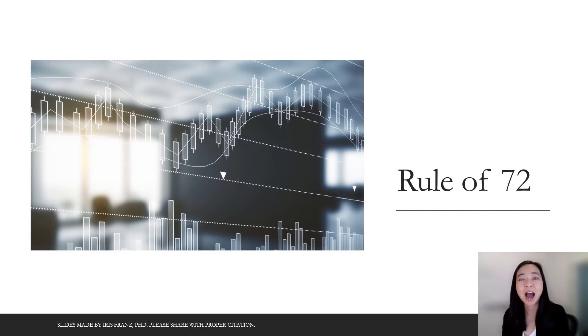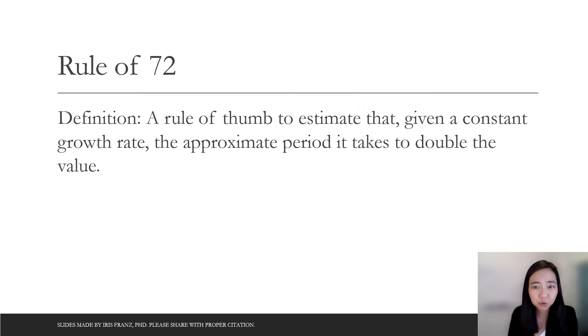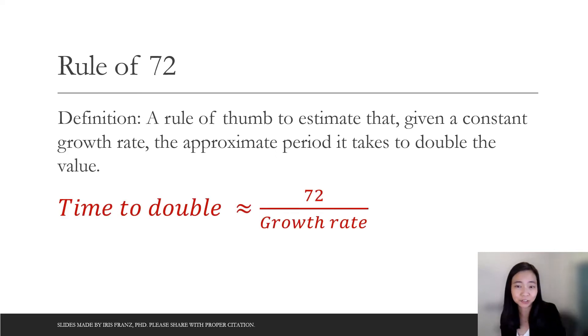Next, I'm going to talk about how to use rule of 72. So here, the rule of 72 is a rule of sum. It's an estimation. Approximately how many periods does it take for your wealth to double? So how do we calculate that? Here is the rule of 72. The time to double is approximately equal to 72 divided by your growth rate.